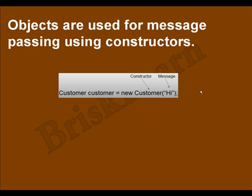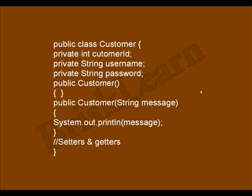Now let us see the example of the customer class. The customer class has customer ID, username, and password, along with setter and getter methods. Here you can see 'customer' with just an opening and closing curly brace — this is the default constructor. You can also see another 'customer' constructor that has a string parameter — this is a parameterized constructor. In such a way you can define your own constructors. The key point is that the class name and the constructor name are always the same.